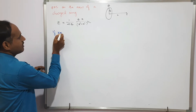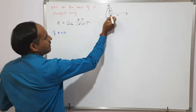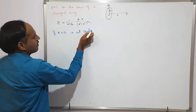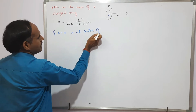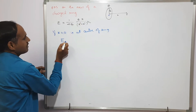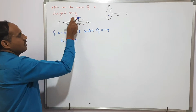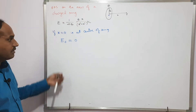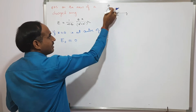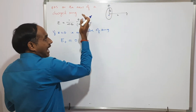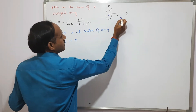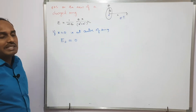If we take x = 0, meaning at the center of the ring, then E at center becomes 0 — zero into something is zero. So we understand that the electric field strength at the center of the charged ring is zero. As we move away from the ring, E starts to increase.